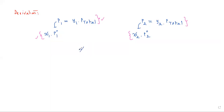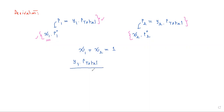It is a known fact that x1 plus x2 is equal to 1. From these relations, x1 can be given as y1 into P_total divided by p°1, and similarly x2 is equal to y2 into P_total divided by p°2, and their sum equals 1.